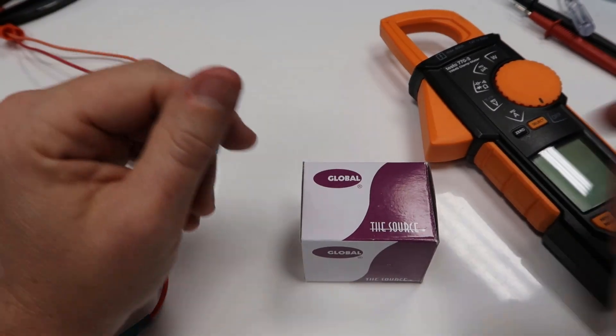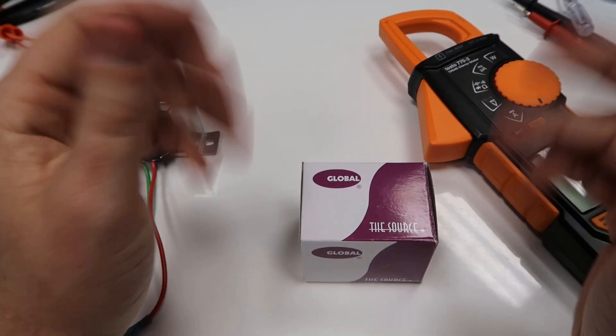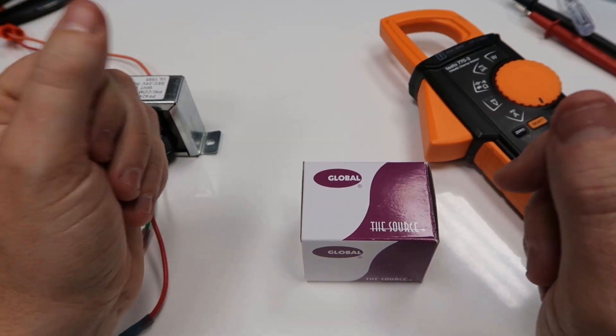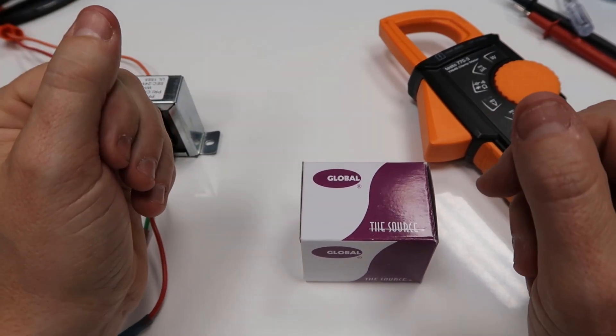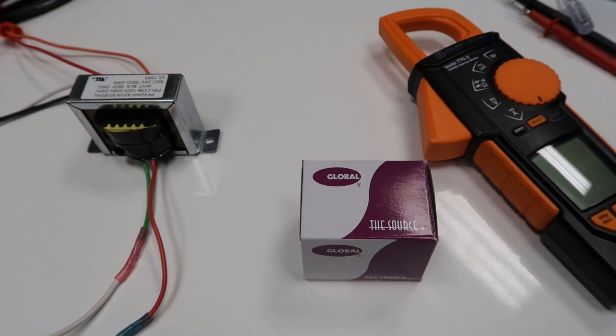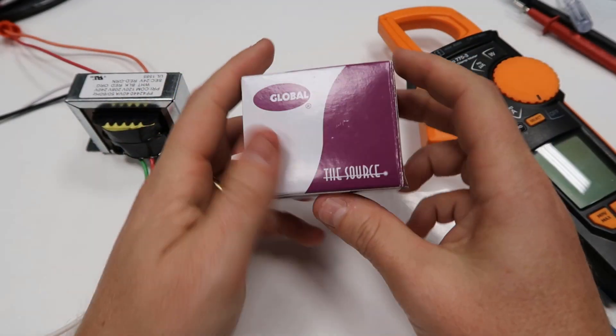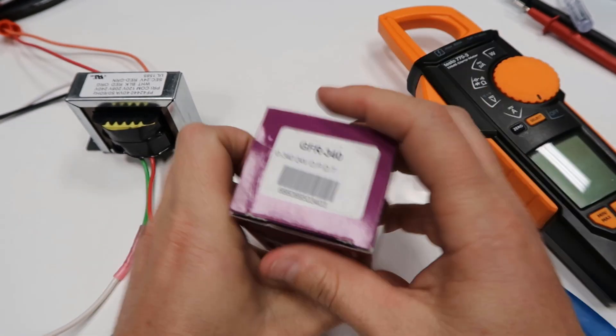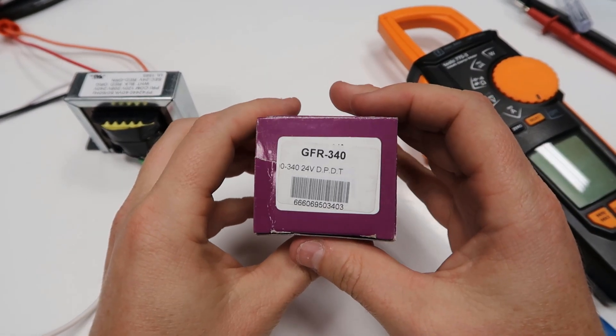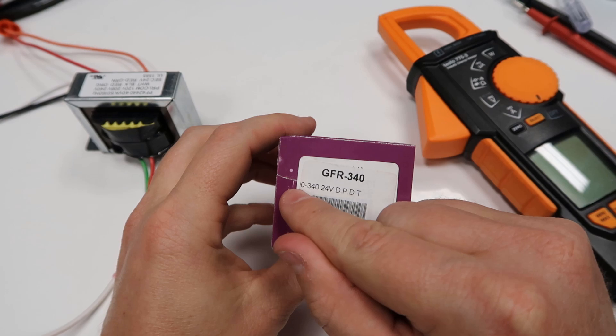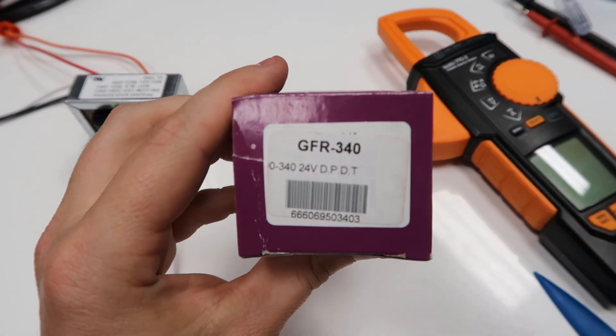In this video, I want to show you the 9340 relay and go over some simple steps of how to use it, what the different parts are, and what some of the ratings are on the actual relay itself. First off, this is a typical 9340 relay box. They're made by multiple different brands. The nine is cut off here, but it's 9340 here.